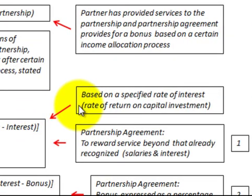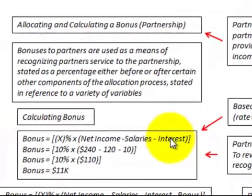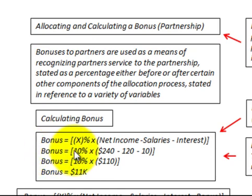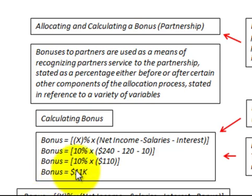The interest here is based on a specified rate of return on the capital investment. The partners invested cash and assets in the business, and the partnership agreement states a certain rate of return they should be receiving on that. So in our example, the bonus is 10% times $240,000 net income, minus salaries of $120,000, minus interest of $10,000. That gives us 10% times $110,000, which equals a bonus of $11,000.